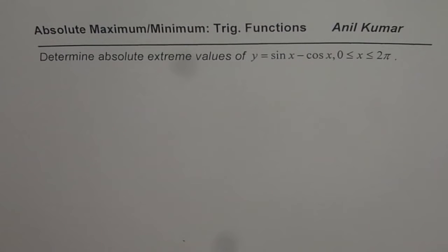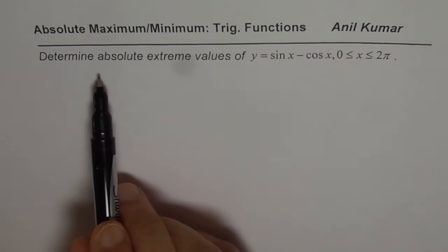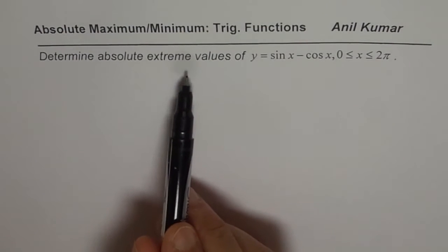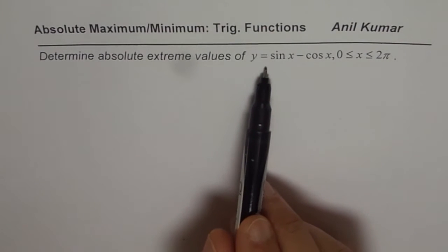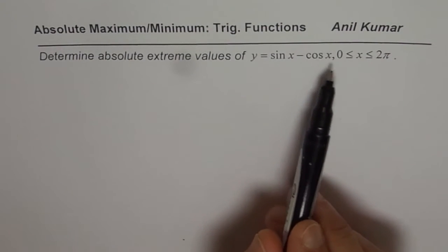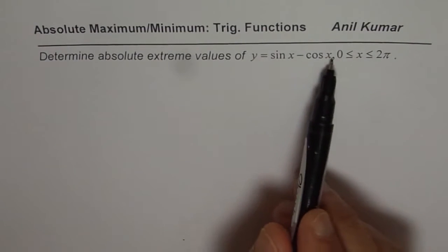I am Madhul Kumar and we will further explore how to find absolute maximum and minimum for a trigonometric function. The question here is: determine the absolute extreme value of y equals sin x minus cos x, where x is between 0 and 2 pi.